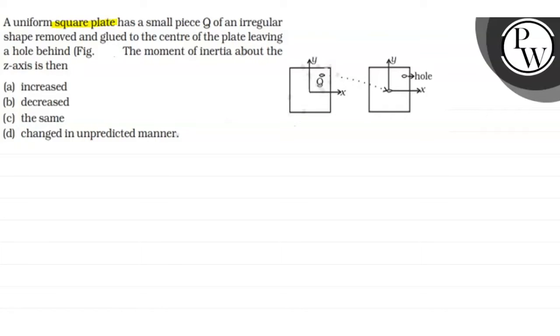A uniform square plate has a small piece Q of an irregular shape removed and glued to the center of the plate, leaving a hole behind. The moment of inertia about the Z axis is then: option A increased, option B decreased, option C the same, option D changed in unpredicted manner.